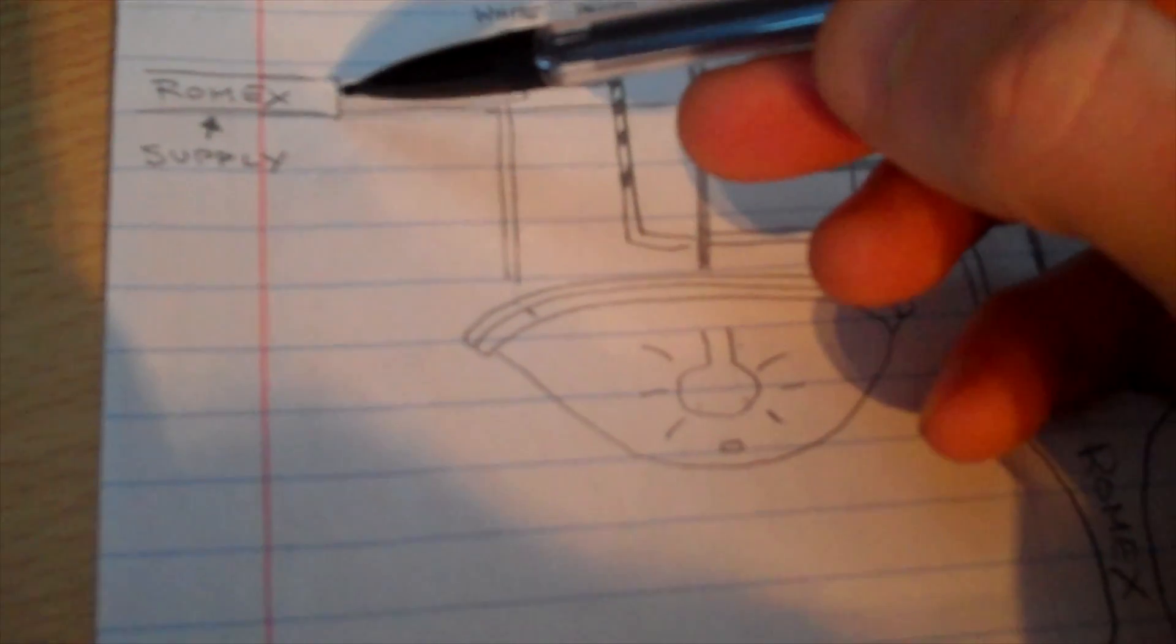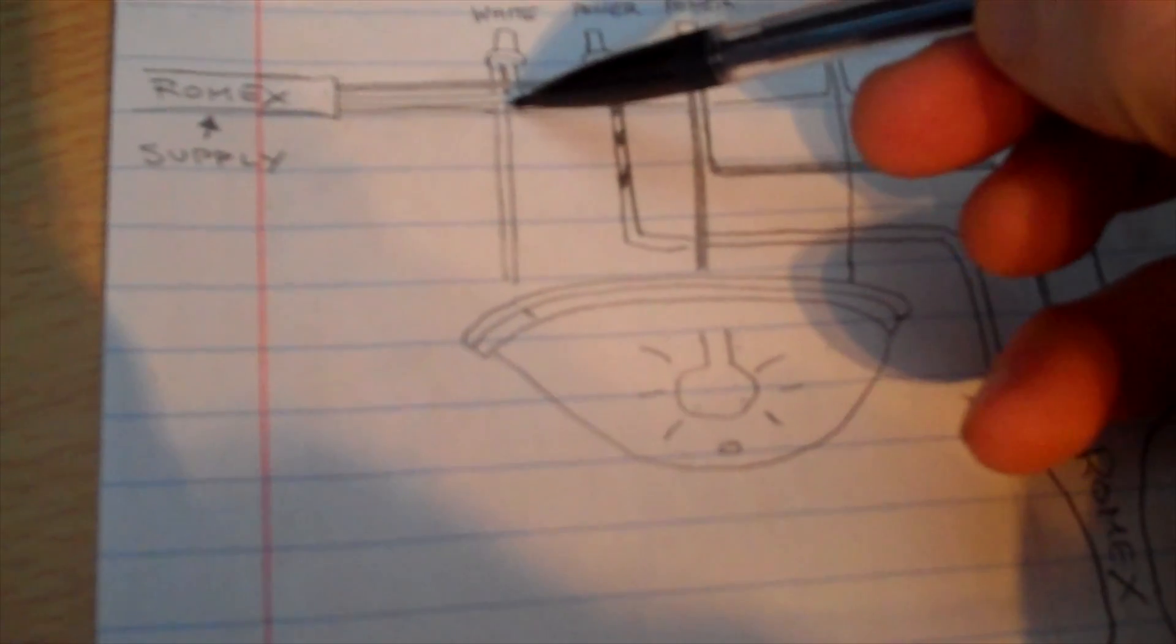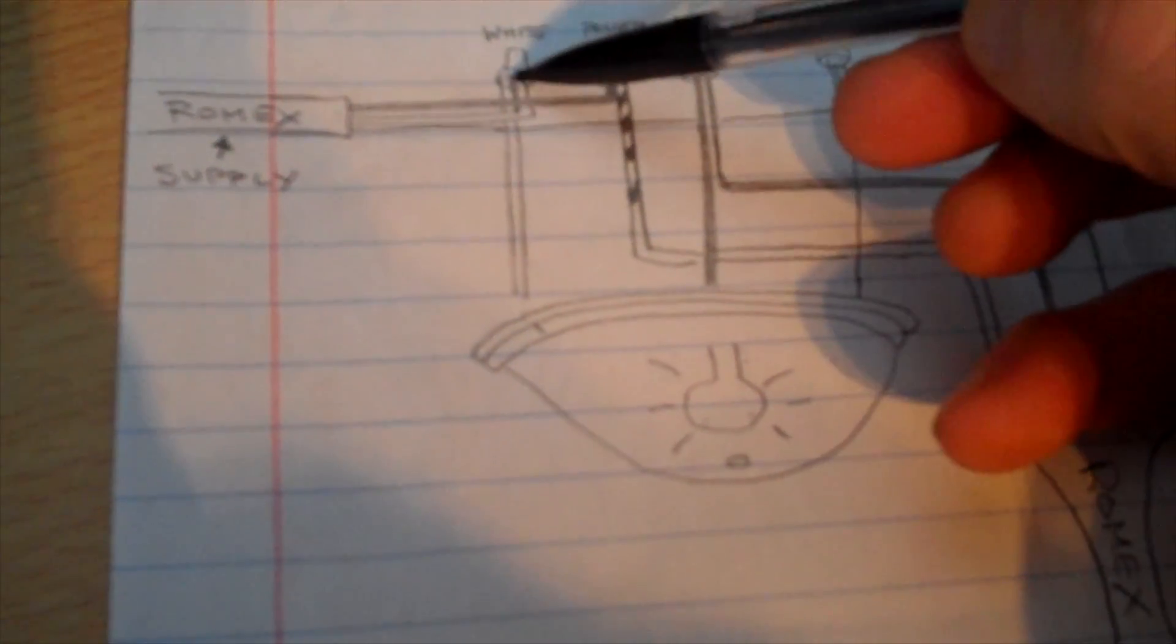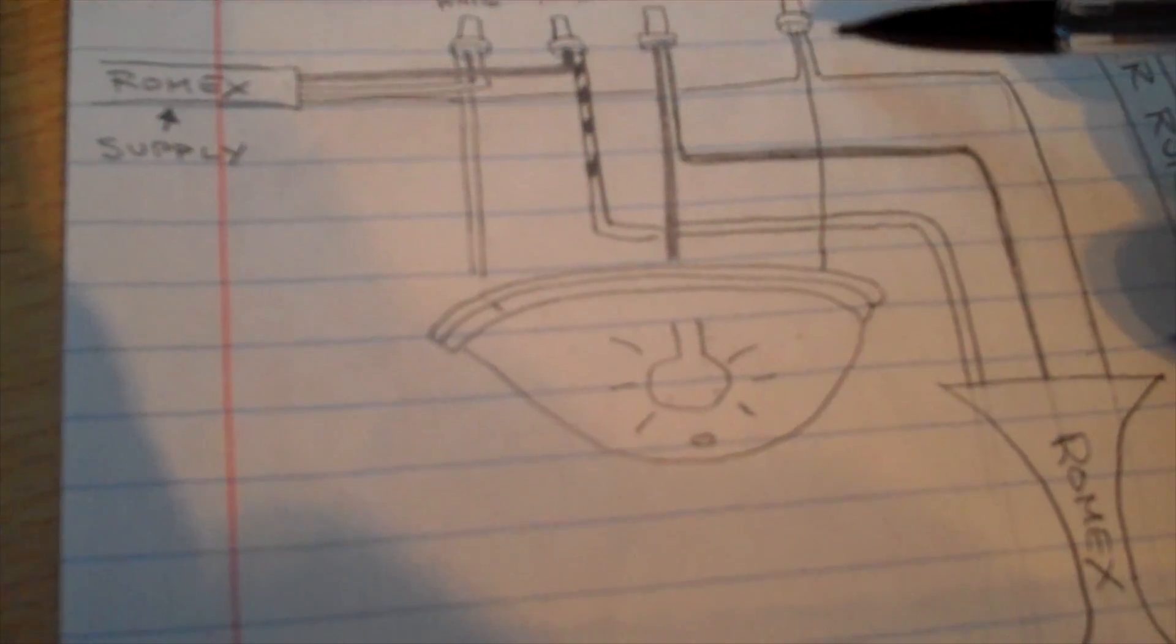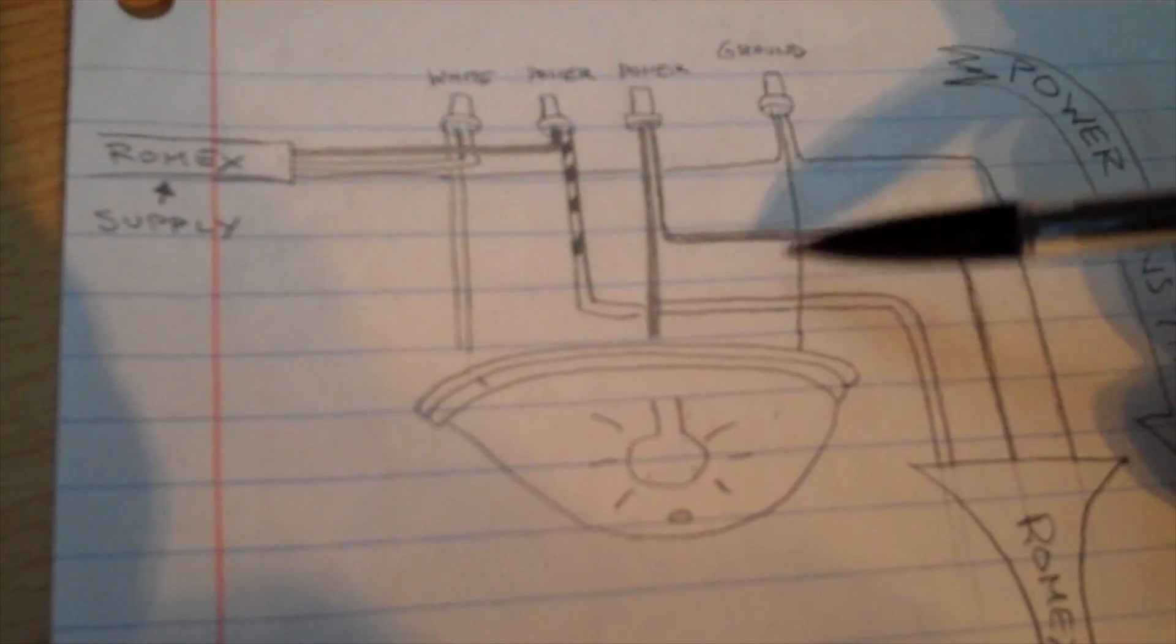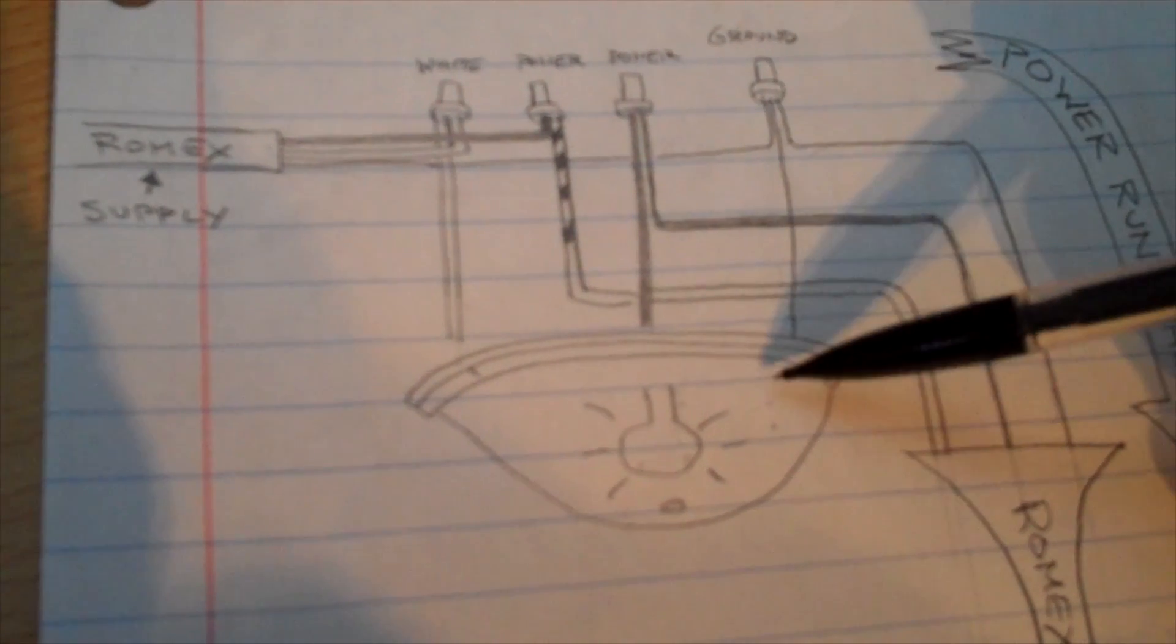Here's the white that comes in. The white is going to get tied together and it's going to go right to light. Your ground, which is the bare copper wire, is going to get tied together to the light ground and that's going to stay with the light.